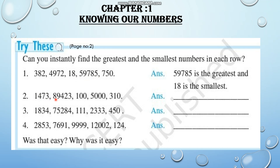Now look at the next one: 1473, 89,423, 100, 5000, and 310. Among these numbers, 89,423 is the greatest number and the smallest number is 100. So you can write: 89,423 is the greatest and 100 is the smallest.